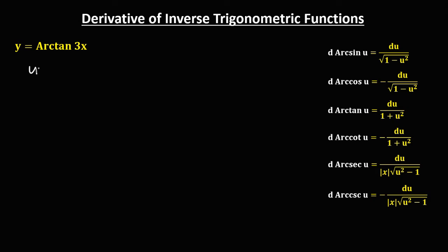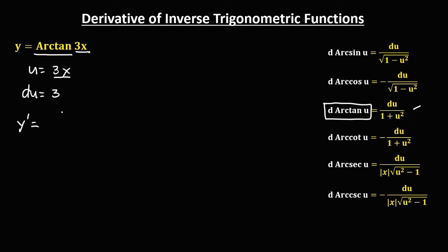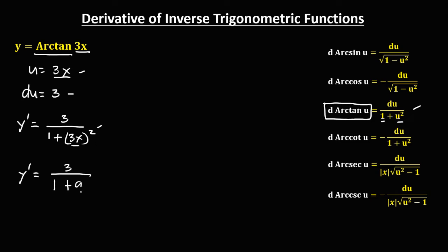For this given, u is equal to 3x, and the derivative of u, the derivative of 3x, is 3. To find the derivative of arctan(3x) using the arctan formula, y prime equals du over 1 plus u squared. So du is 3 over 1 plus (3x) squared, which simplifies to 3 over 1 plus 9x squared. This is the derivative of inverse tangent of 3x.